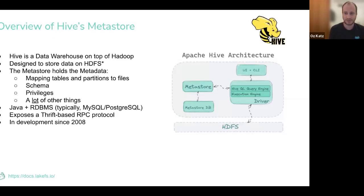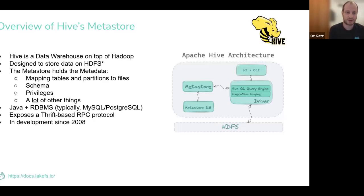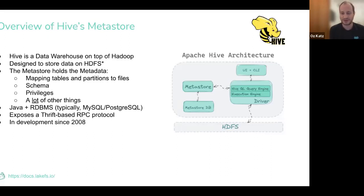One of the components inside Hive was called Metastore. It provided a way to map files into tables — the data itself sat in HDFS or any Hadoop-compatible file system, but you needed to map those files to a table abstraction. The Metastore managed entities like tables and partitions, privileges, everything a modern data warehouse would manage. It was a separated component with a nice separation between data and metadata. It's a Java project based on a relational database, typically MySQL or Postgres, exposing a Thrift interface.